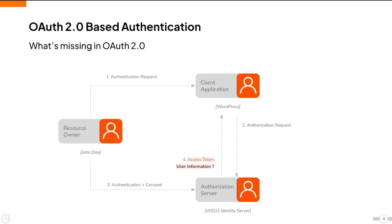Let's see why we need an additional identity layer on top of OAuth2, as opposed to solely using OAuth2. In a general OAuth2 flow, the resource owner provides credentials to the authorization server, followed by the authorization server sending an access token to the application. However, even though the resource owner is authenticated, this does not provide any information about the end-user to the client application — the authorization server only passes a token that can be used to access resources on behalf of the end-user.